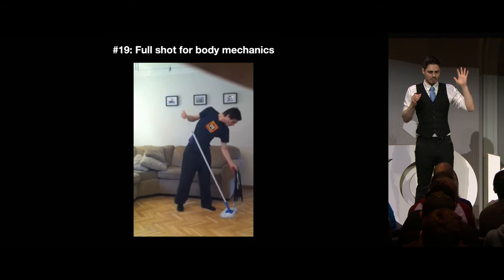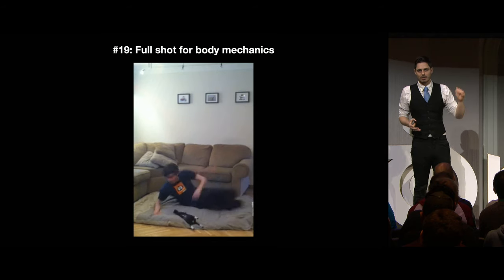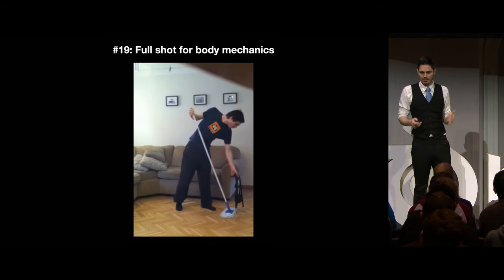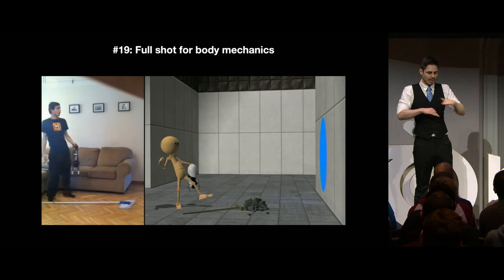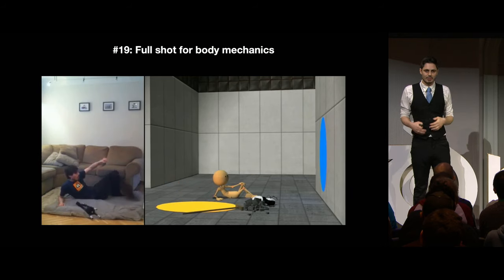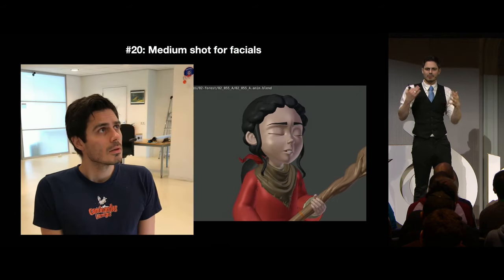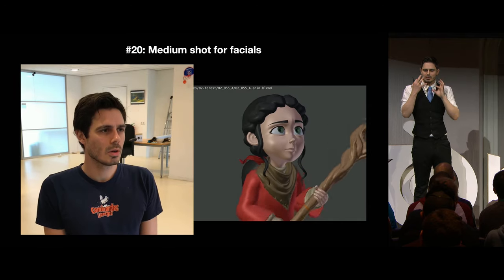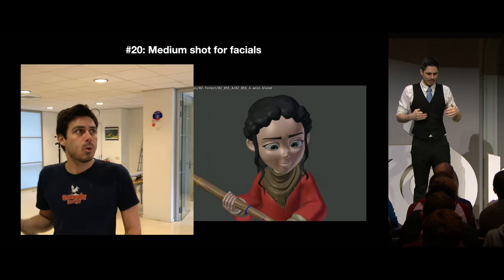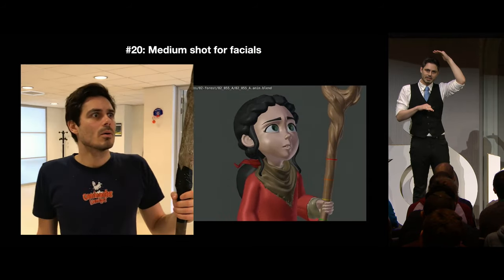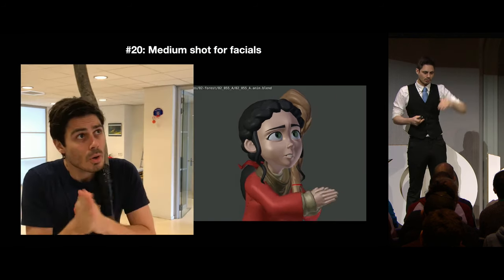When it comes to shots where you want to look at body mechanics, try to do a full shot — that means the entire body is inside the shot. You don't want to be cutting off the feet if that information will become critical later. When it comes to reference shots where you want to look at more facial expressions, like in this instance, it's a second pass aimed more at medium shots — closer to chest level and including the head.